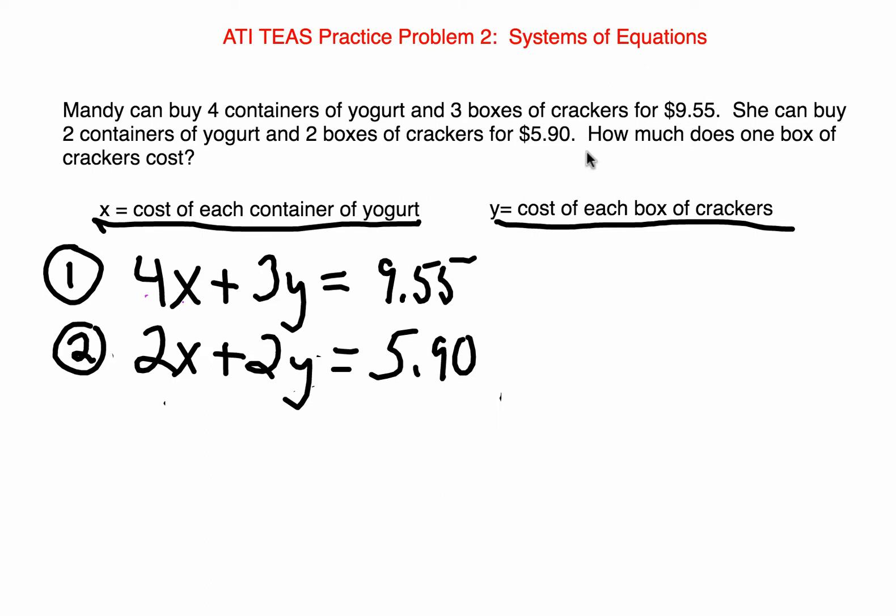Now, be mindful, in the original question, we were asked to find the cost of crackers only. Therefore, we are going to make it our objective to solve for the Y variable first, cost of each box of crackers. As a matter of fact, we don't have to solve for X because the question is not asking for how much the containers of yogurt cost. So, we are going to use a system of equations that we call elimination.